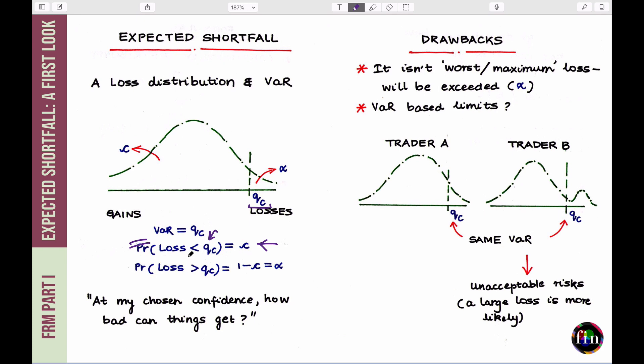Verbally speaking, it means that you are C confident. Or if you were to convert C to a percent, you are that much percent confident that your losses will not exceed that VAR number, which is given by QC. Alternatively, you can make another statement. And that is that the chance or probability that the losses indeed will exceed the QC, which is your VAR, is equal to the level of significance.